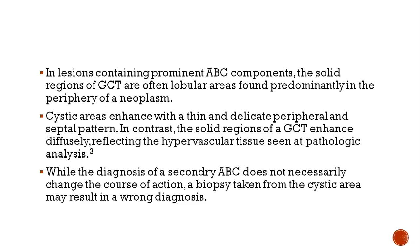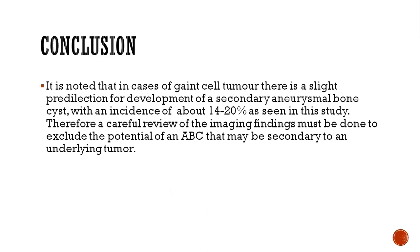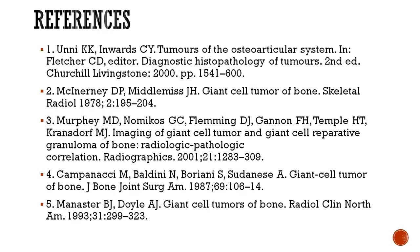While the diagnosis of a secondary ABC does not exactly change the course of treatment — which is surgical excision of the tumor — it is important in the diagnostic part, since a biopsy taken from the cystic area may result in a wrong diagnosis. Care has to be taken to mention this in the report in case there is a secondary ABC component. In conclusion, in cases of giant cell tumor, there is a slight predilection for the development of a secondary ABC within them, with an incidence of about 14 to 20% as seen in this study. Therefore, a careful review of imaging findings must be done to exclude the potential of an ABC secondary to an underlying tumor. Thank you.